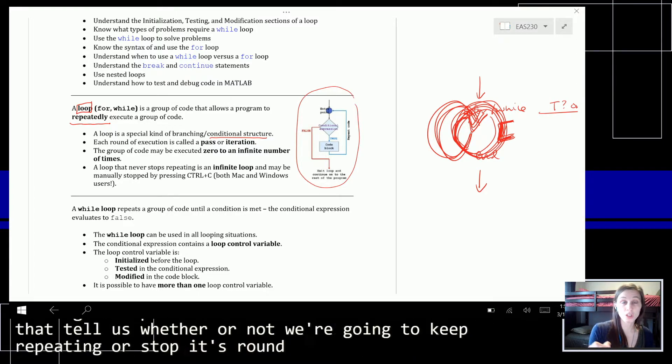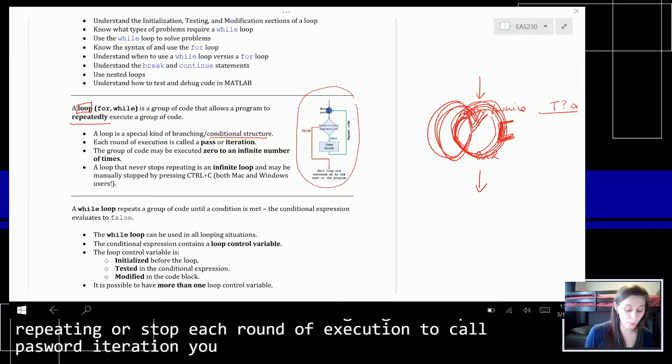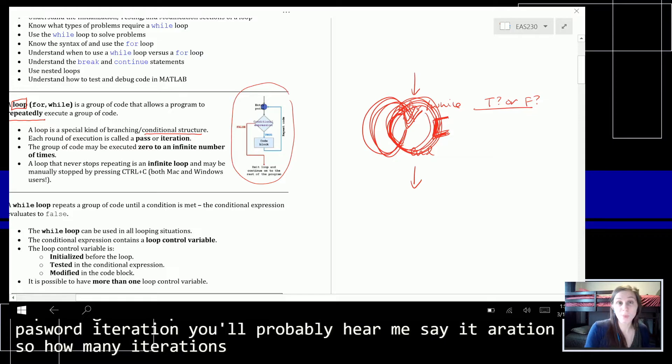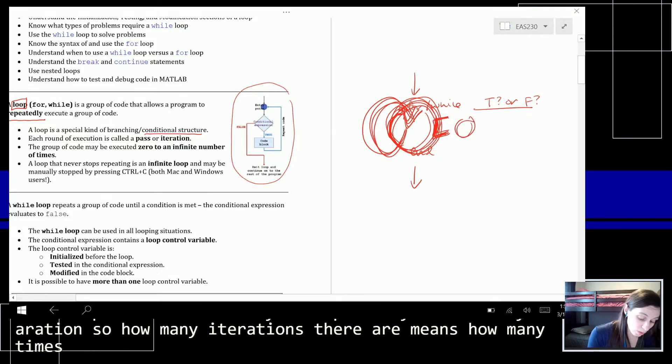Each round of execution is called a pass or an iteration. You'll probably hear me say iteration. So how many iterations there are means how many times did this code repeat.